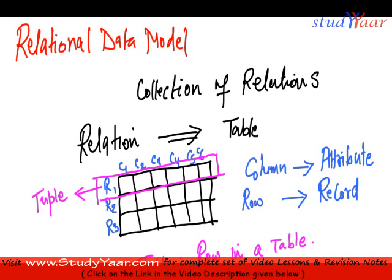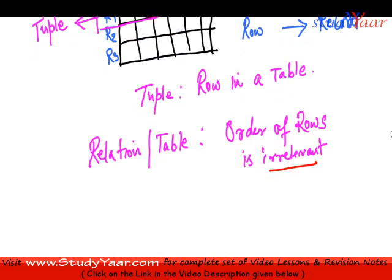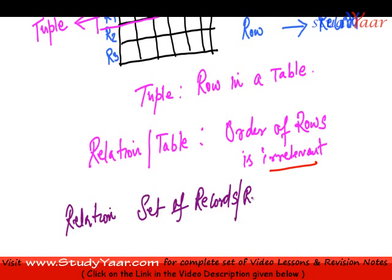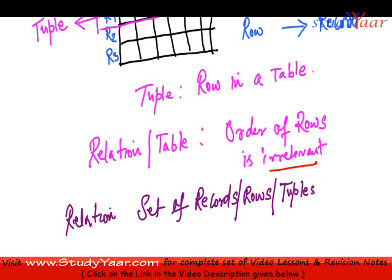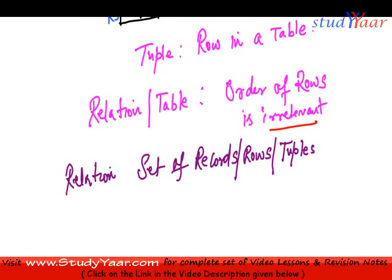Because relational data model is a collection of relations and a relation is a set of records. And these records are rows. And the rows are tuples. These all are the same things. And since this is a set, order is not important.